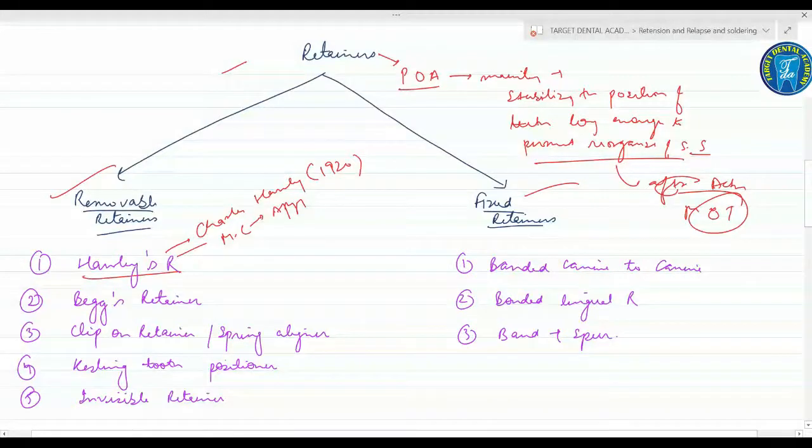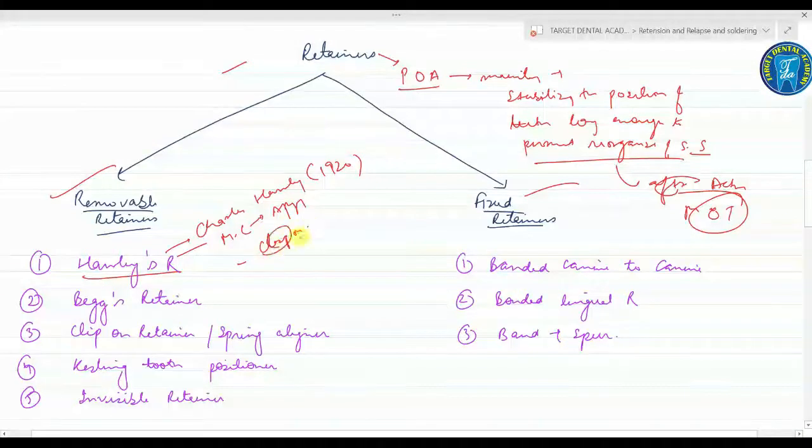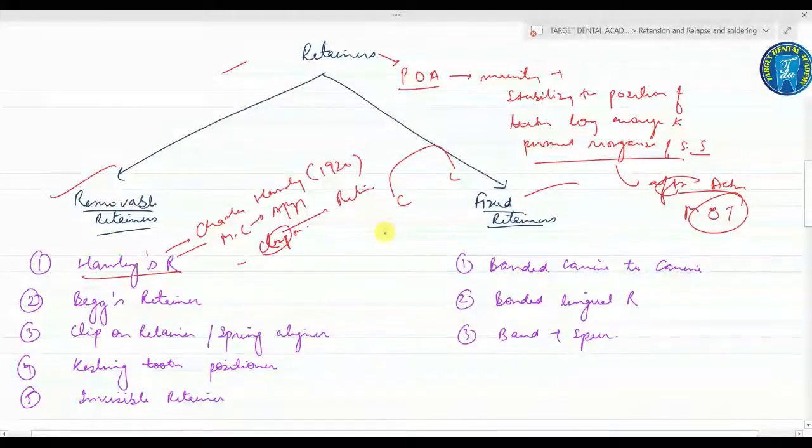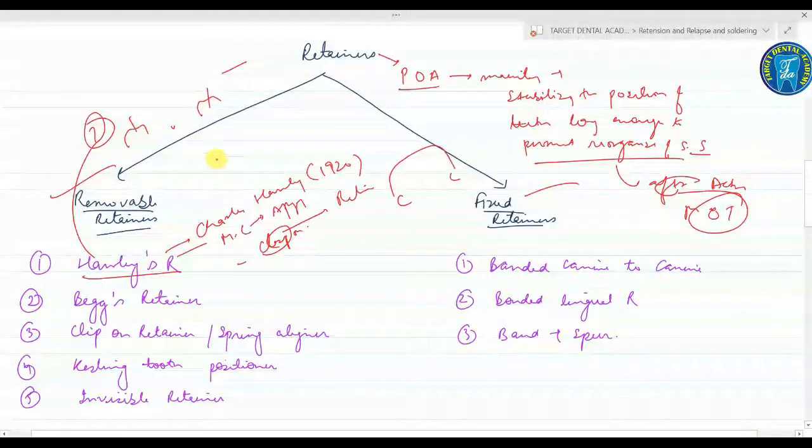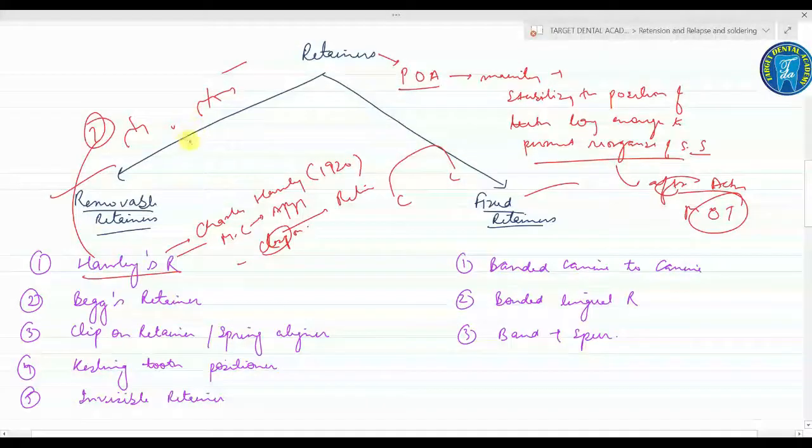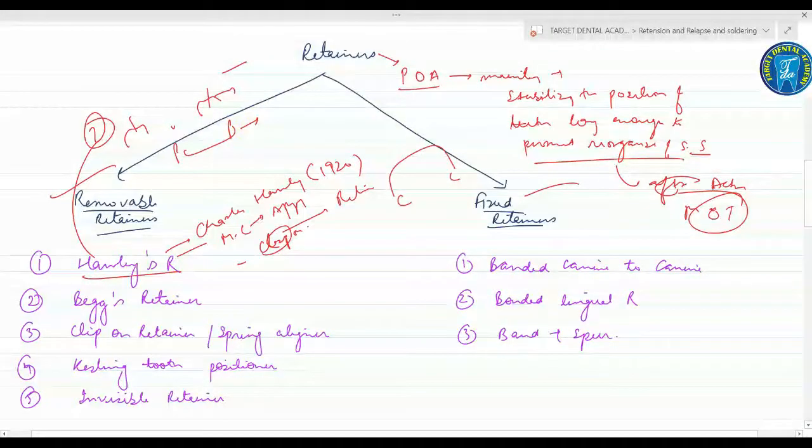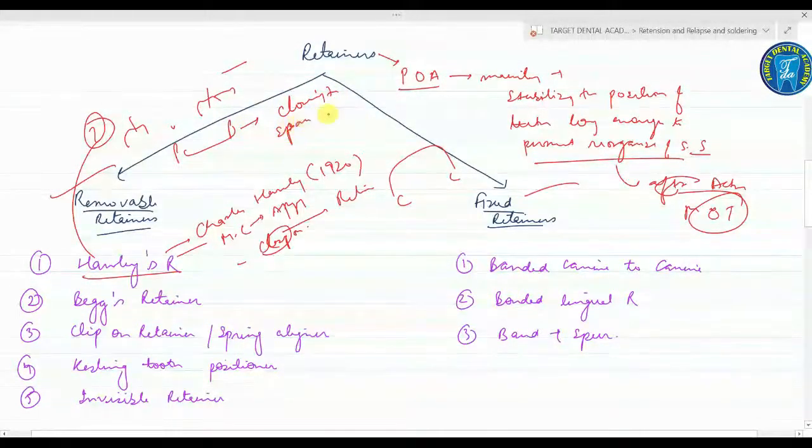The classic Holly's retainer consists of a clasp on the molar - the clasp is for retention purpose - and a sheet of short labial bow which extends from canine to canine. In the second Holly's retainer there are Adam's clasps on the molar for retention, and the labial bow extends from premolar to premolar. It helps in closing the space distal to the canine.